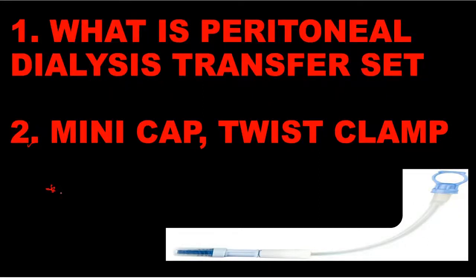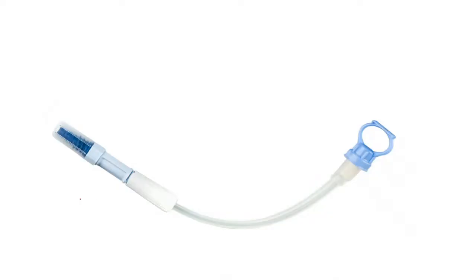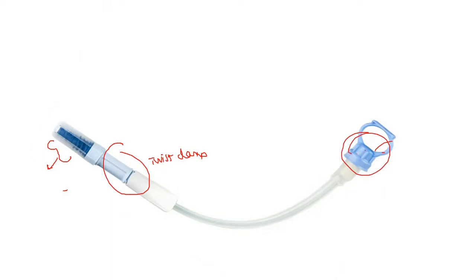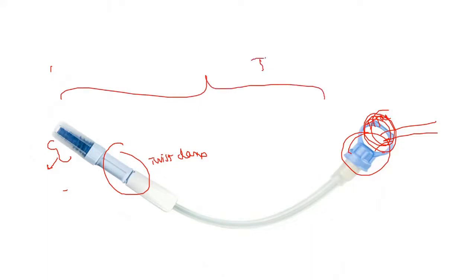The transfer set is an extension used to connect the peritoneal dialysis bag to the PD catheter. The main advantage is that it reduces trauma and infection of the PD catheter caused by repeated connections. It consists of the mini cap, which usually comes with a betadine inside it, and a twist clamp that you twist open or close to avoid clamping. This part connects to the PD catheter through the titanium adapter.